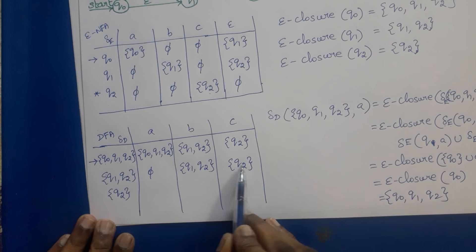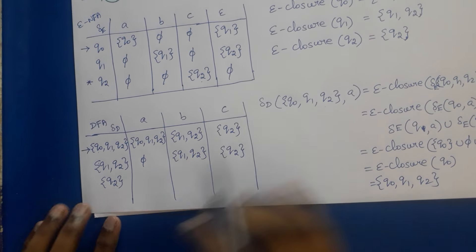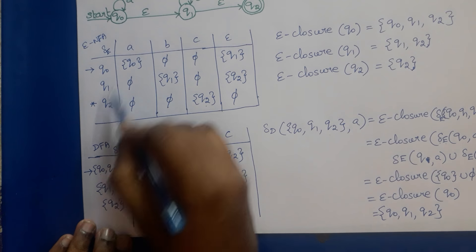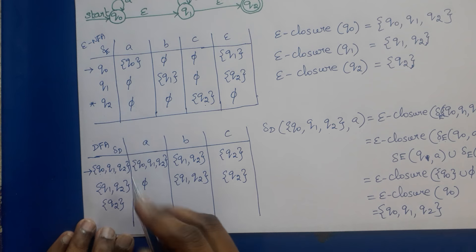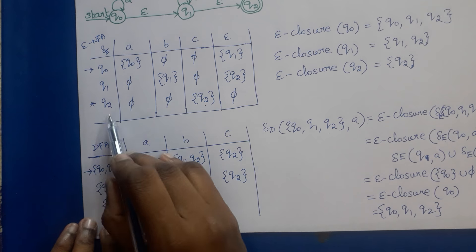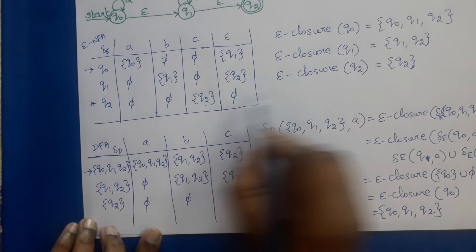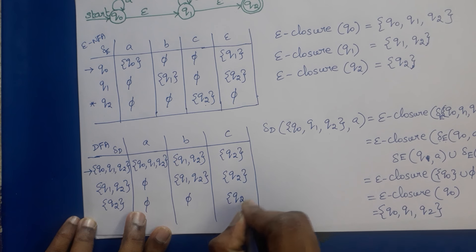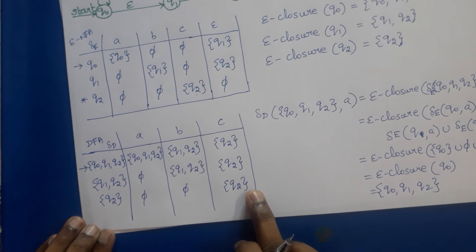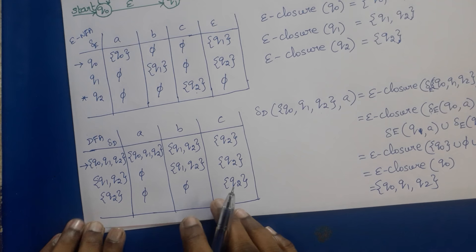States {Q1, Q2} and {Q2} are already written. For state {Q2} on A: delta_E(Q2, A) is phi, epsilon closure of phi is phi — dead state. For {Q2} on B: phi, epsilon closure of phi is phi — dead state. For {Q2} on C: Q2, epsilon closure of Q2 is {Q2}. From state {Q2} there are no new states introduced. So these are all the states of the DFA.